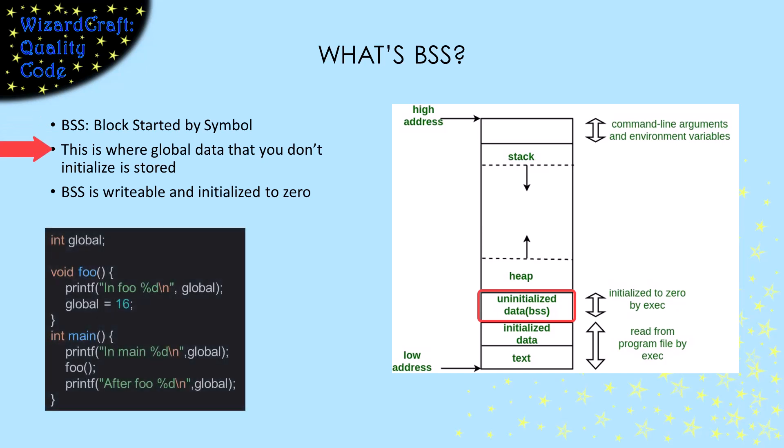For example, if we modified our global example to not give global a value at its declaration, it would be stored in the uninitialized data segment. The nice thing about this is that the compiler zeros this entire area. So global variables that you don't give a value to will start with a value of zero. So when I run this, the first print statement will output zero.